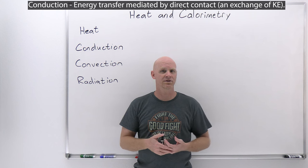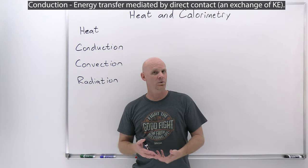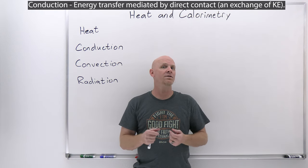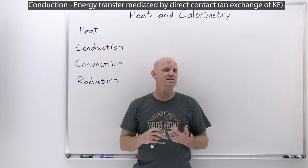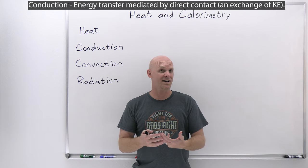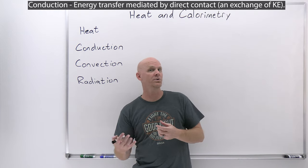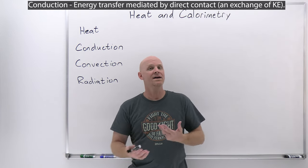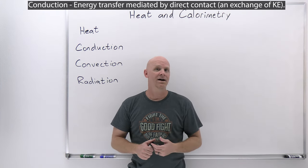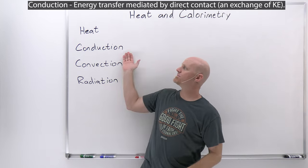In solids, the atoms and molecules aren't flowing like they would be in a liquid, and they're not as spread out as they would be in a gas — but they are vibrating. The higher the temperature, the greater the amplitude of these vibrations. When you bring two objects of different temperatures into direct contact, the hotter one has greater vibrations, and those molecules start bouncing into the molecules of the other object, causing them to bounce faster. Some of that kinetic energy gets transferred from the hotter object to the colder one, because greater kinetic energy is associated with greater temperature.